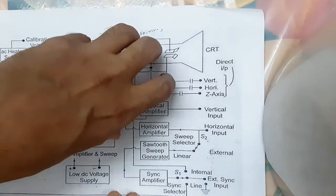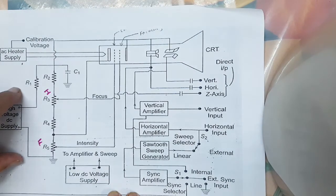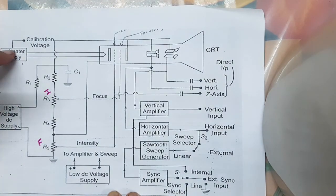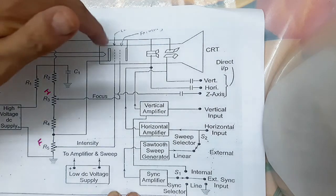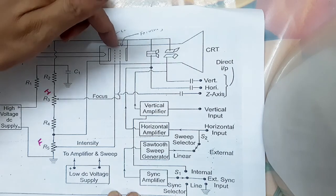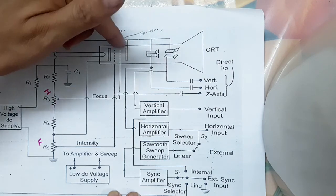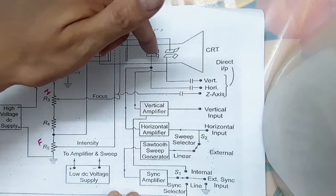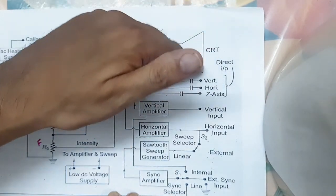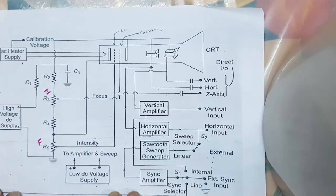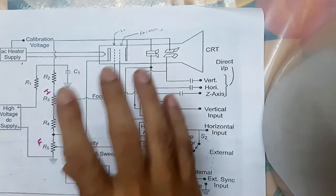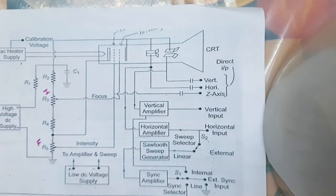In this way, this is our power supply, heater, accelerating anode, focusing anode, two deflecting plates — and this is the complete structure of what is inside the CRT. That's all.